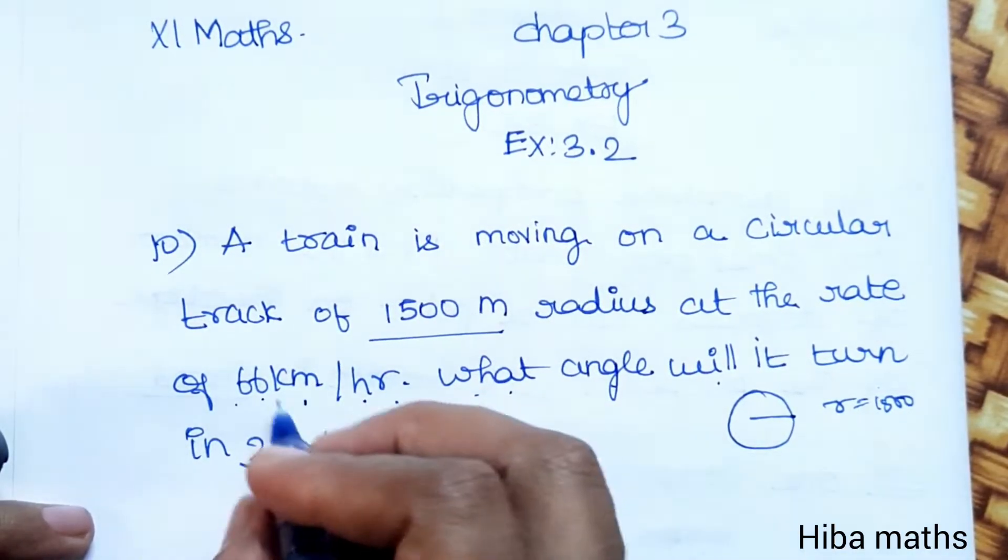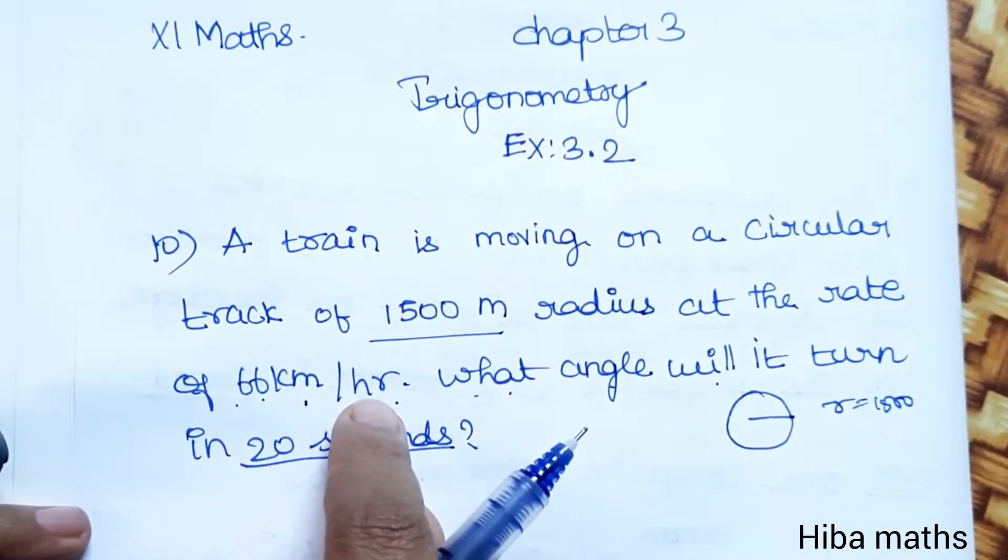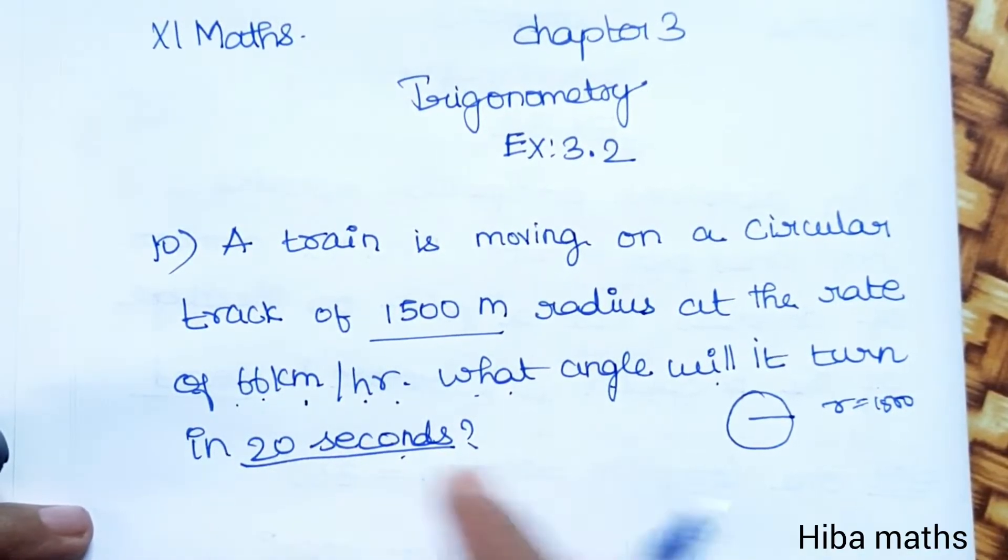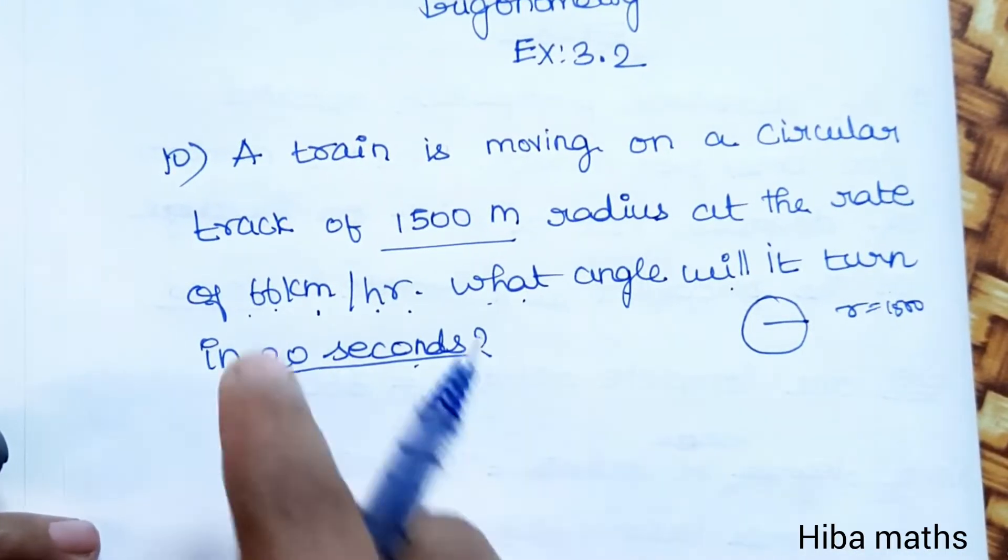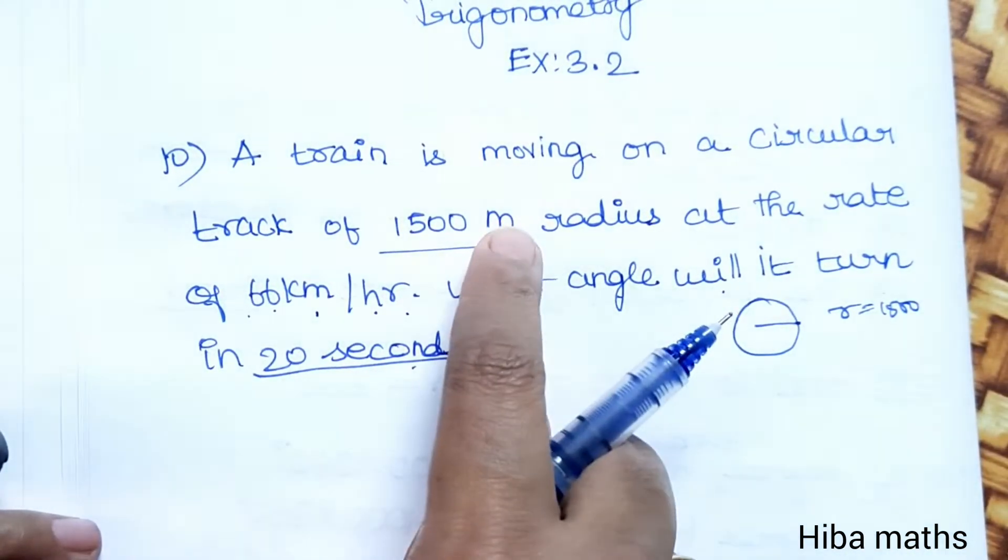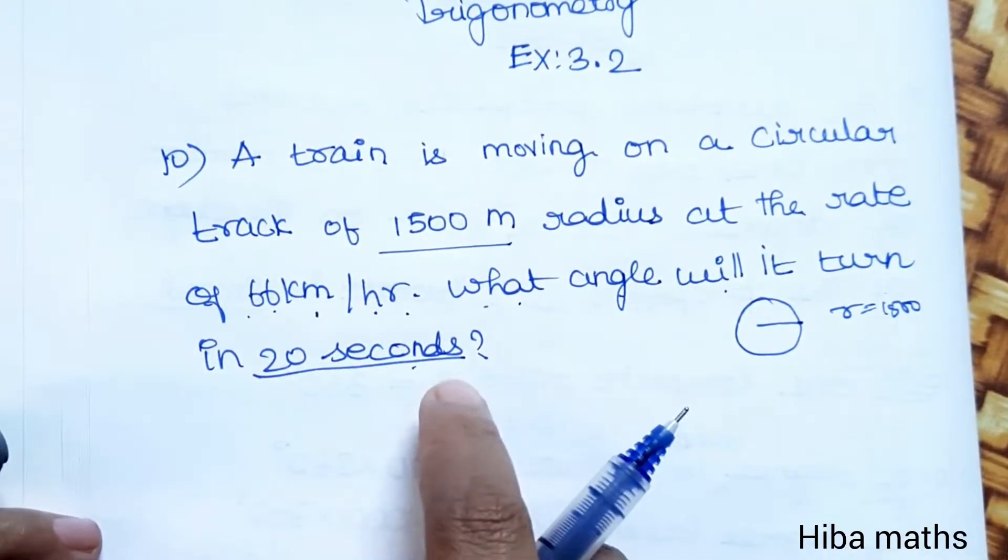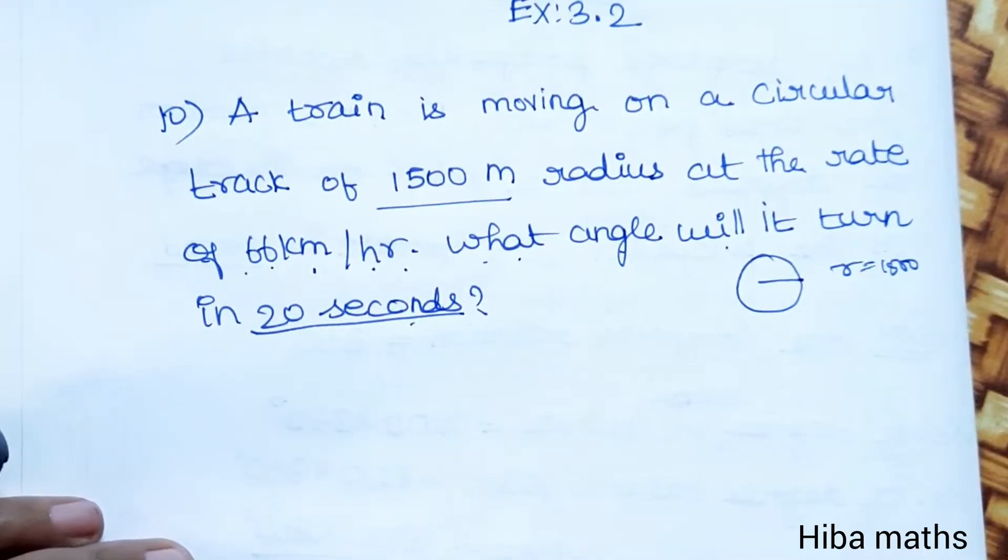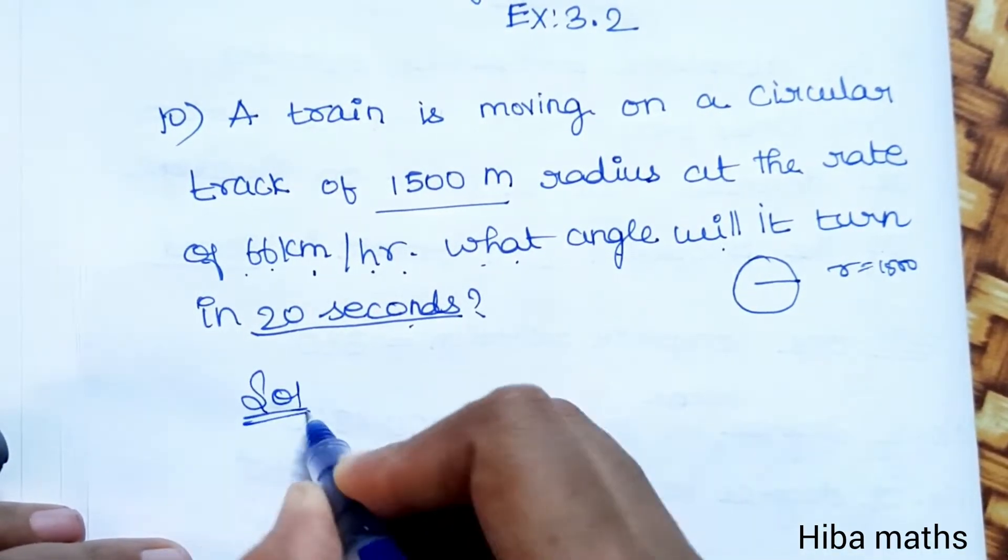Now, we need to convert hours to seconds and kilometers to meters, since the radius is given in meters. We have the radius, and we need to find the angle, which is L over R. So in this method, we will do the solution.